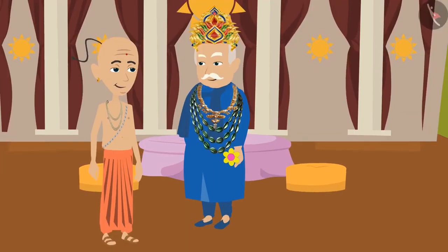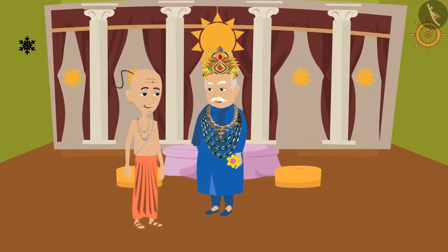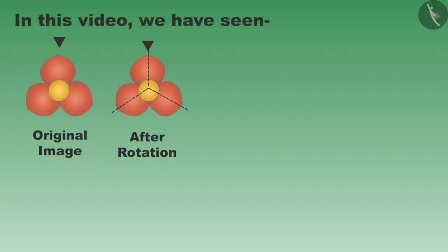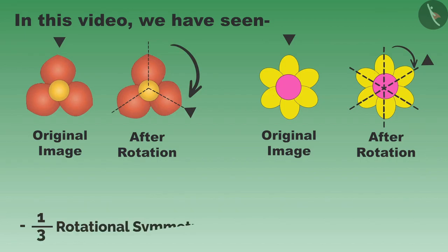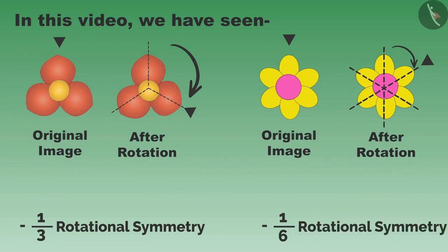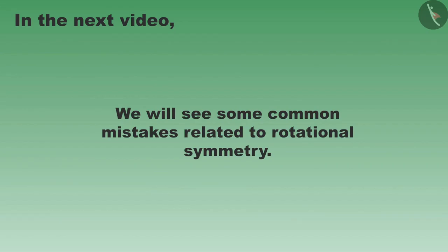Very good, Tenali Rama! Now both the king and Tenali Rama want to take some rest. Children, in this video we have seen some objects and shapes that do not change their shape even after one-third and one-sixth rotation. These objects have one-third, that is one-by-three, rotational symmetry and one-sixth, that is one-by-six, rotational symmetry. In the next video we will see some common mistakes related to them. Thank you.